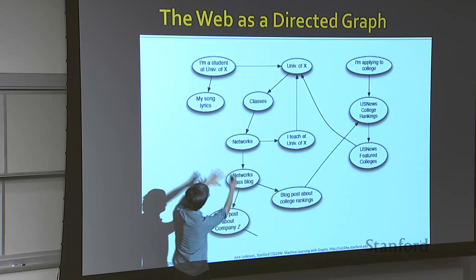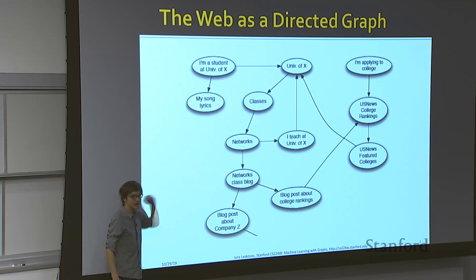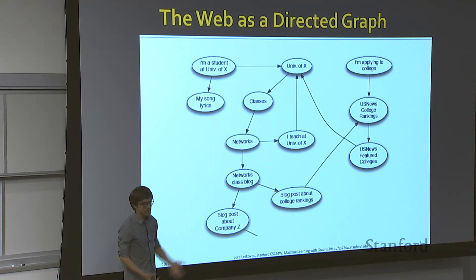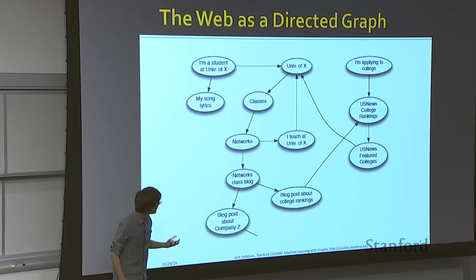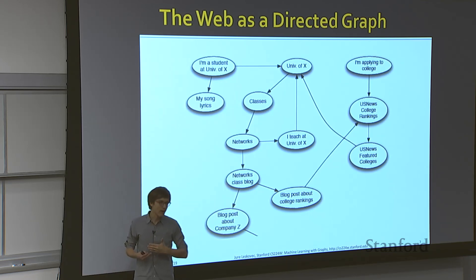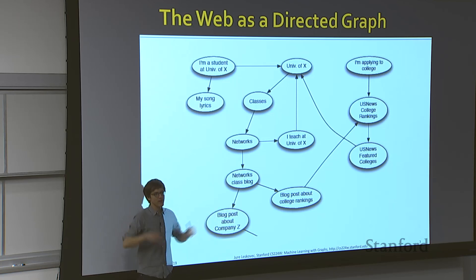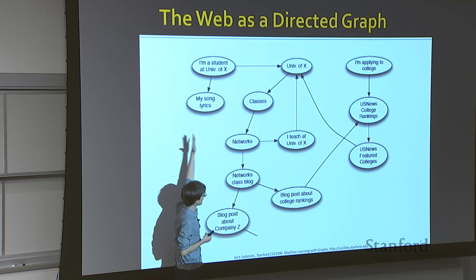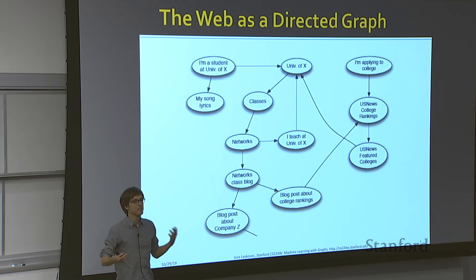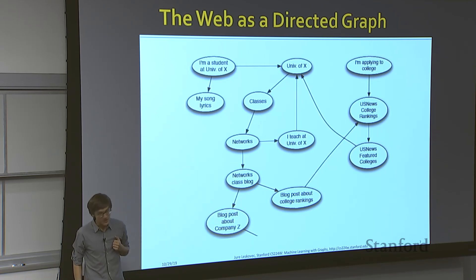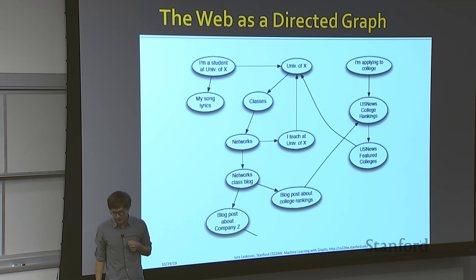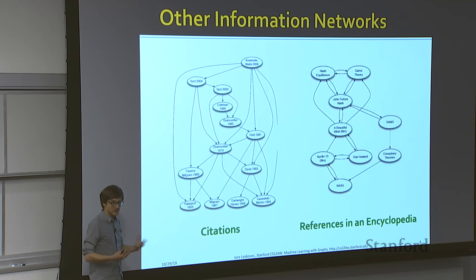You can think of the web as a directed graph where web pages point to one another — essentially all the pages Google indexes. Web pages are discovered by web crawlers or spiders: you start at a few websites and do a breadth-first search exploration of the web. That's what Google does every night to discover pages. There's no central directory, so BFS over this graph identifies the pages.